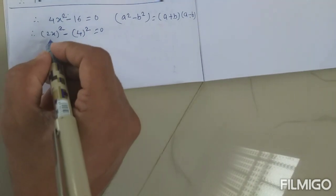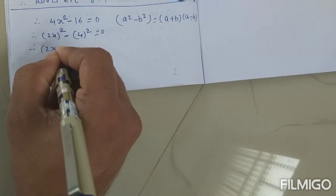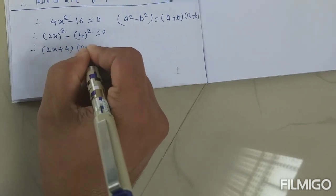Now a plus b and a minus b. Value of a is 2x. Value of b is 4. Therefore 2x plus 4, 2x minus 4.